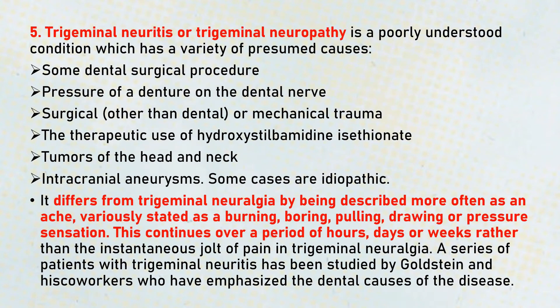Then trigeminal neuritis or trigeminal neuropathy is a poorly understood condition where there can be continuous pain. It can be due to any dental surgical procedure, pressure on a denture, surgical or mechanical trauma, or any kind of tumors or intracranial aneurysms. It differs from trigeminal neuralgia by being described more often as an ache — variously stated as burning, boring, pulling, drawing, or pressure sensation. It is not a stabbing kind of pain; it is a dull, burning pain of longer duration compared to trigeminal neuralgia.